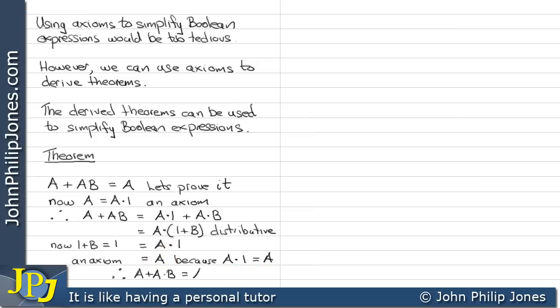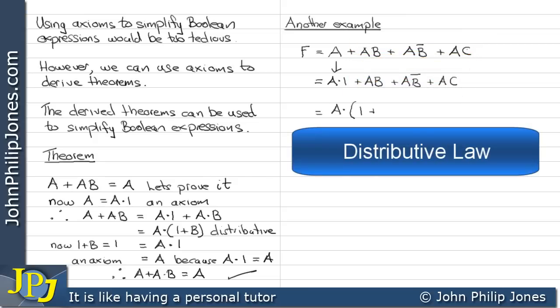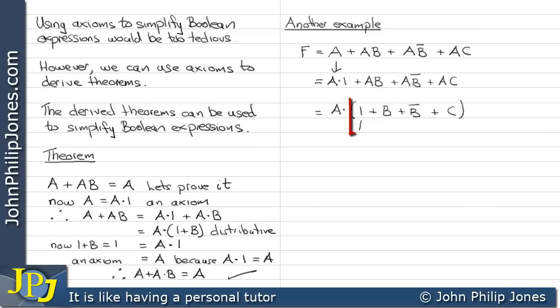Therefore we can prove that A or A and B equals A. Let's look at another example. Here we can see we can replace A with A and 1, then write the remaining min terms down. Then using the distributive law, we can take the A outside of the brackets.